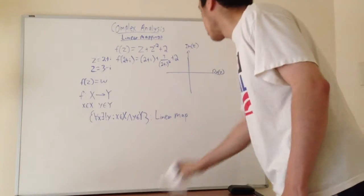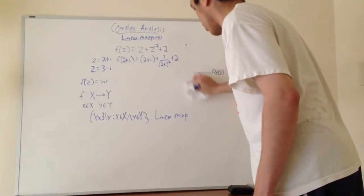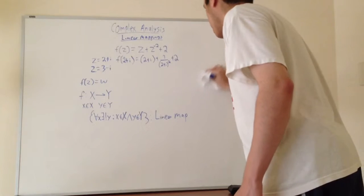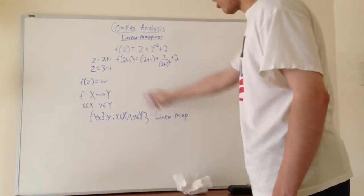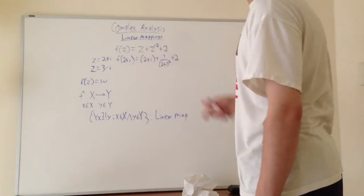I'm going to go ahead and erase this for now because I don't really need this graph to do this problem. Basically, all I did was simply plug in the 2 plus i for each of the z's.